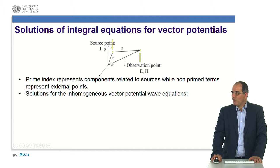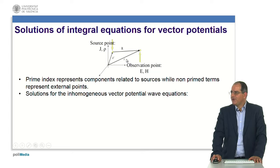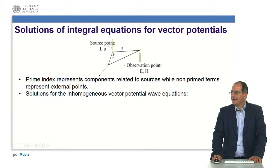In addition, when I don't have sources — for instance, at an observation point — I will use non-prime terms. So at this very same moment, I have a source point where I have a current density and a charge density, and an observation point where I want to find the electric and magnetic field.